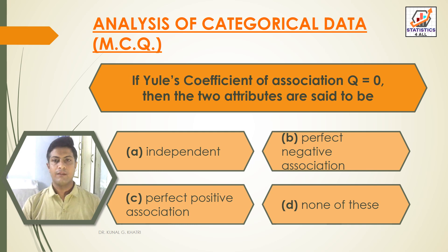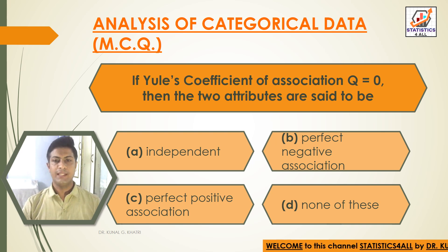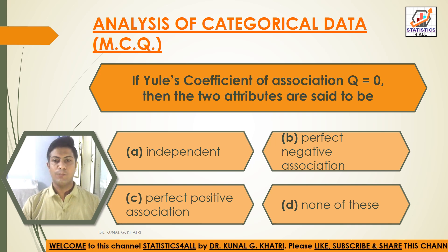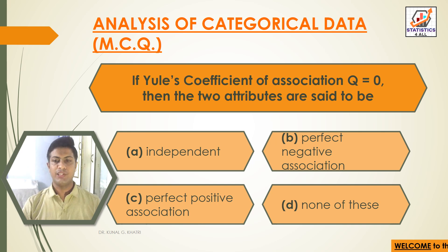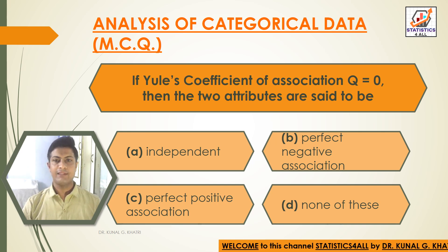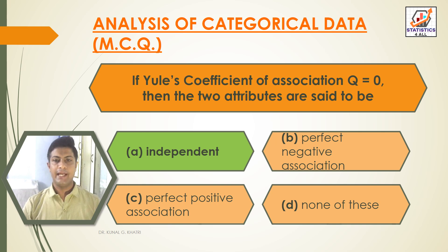Next question: if Yule's coefficient of association Q is equal to zero, then the two attributes are said to be — option A: independent, option B: perfect negative association, option C: perfect positive association, option D: none of these. The answer is option A — independent. If Q equals zero, the two attributes are independent.